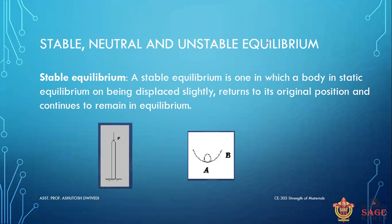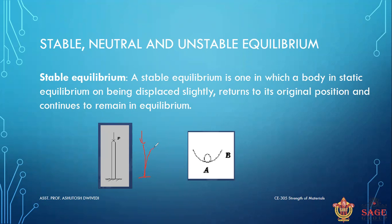Whenever we talk about stable equilibrium, it means that when you apply a load on a column, the column deflects slightly, and when you remove the load, the column restores or regains its original shape. Similarly, a ball displaced from its position returns to its original position when the load is removed. That is called stable equilibrium.